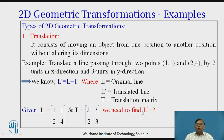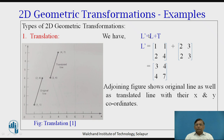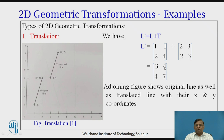We need to find L-dash, the new translated line. Using the relation L-dash = L + T, the original line L in 2×2 matrix form is added to the translation matrix T, also in 2×2 form. Adding these two matrices gives us the translated line L-dash. Looking at the figure, the original line passes through points (1,1) and (2,4), while the translated line passes through the new points (3,4) and (4,7).